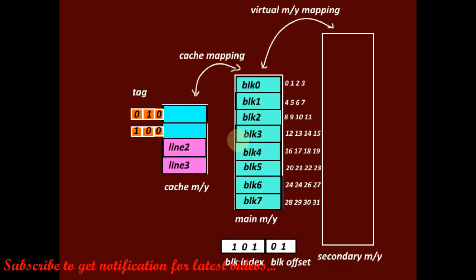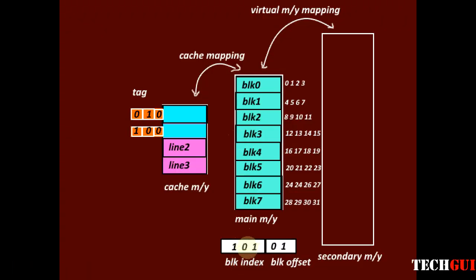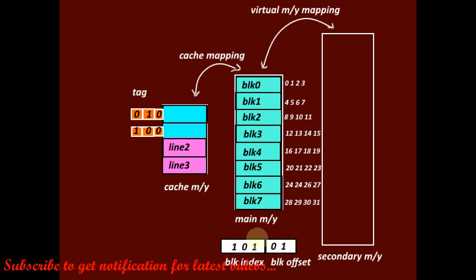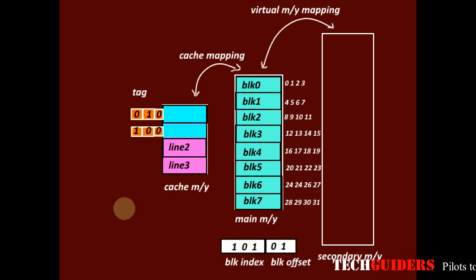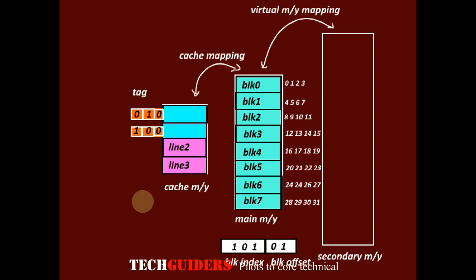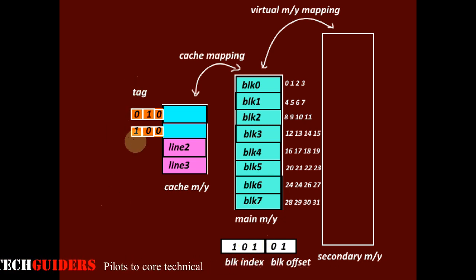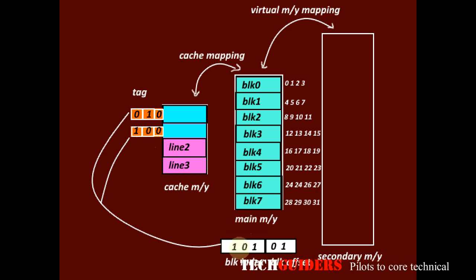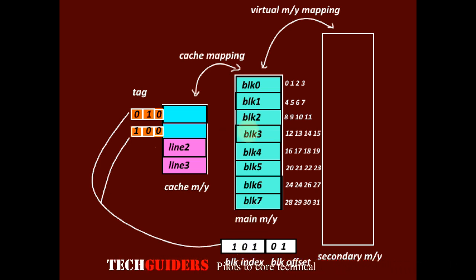If a match is not found, consider a generated physical address split into 2 parts: the least significant 2 bits are the block offset, and the remaining 3 bits are the block index. The block index is compared with every tag in the cache lines, but if there is no match, it is a cache miss and we must access the word from the main memory itself.